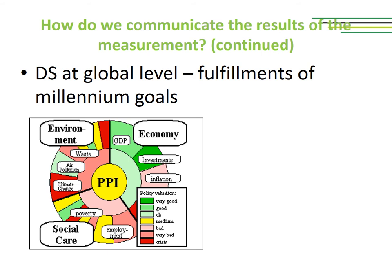Please see on this slide how the dashboard of sustainability looks at the global level. The assessment is done with regard to the level of fulfillment of millennium goals. Even if we are not very familiar with the indicators used, knowing what the colors represent, it is quite easy to assess which dimensions have done okay, which have done great, and which are the challenges for the future concerning the fulfillment of millennium goals.